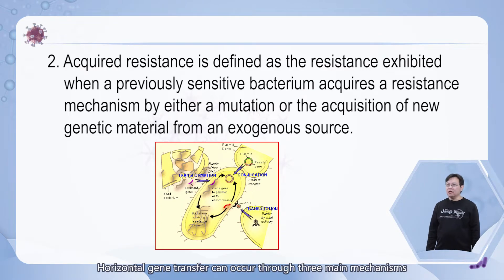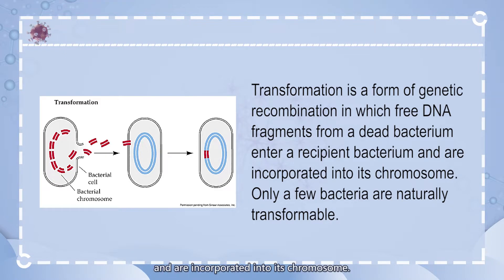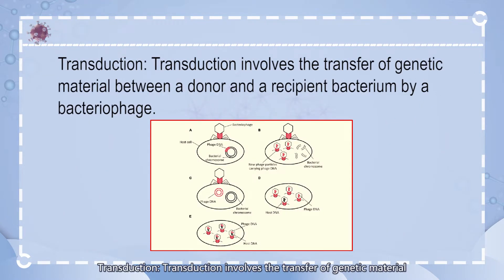Horizontal gene transfer can occur through three main mechanisms. Transformation is formed by genetic recombination in which freed fragments from a dead bacteria and a recipient bacteria are incorporated into its chromosome. Only few bacteria are naturally transformable. Transduction involves the transfer of genetic material between a donor and a separate bacterium by bacterial phage.